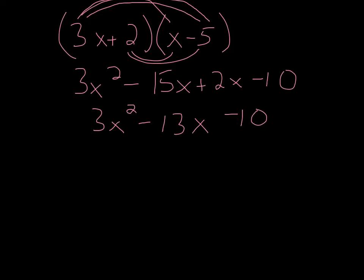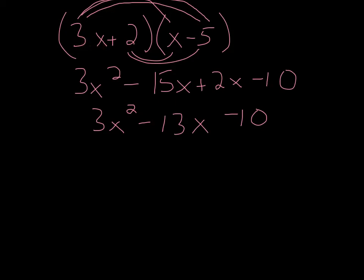Looking back at this, the −10 comes from the last two parts of the binomials. But the −13 is now influenced by whatever is opposite the 3x — we've got to take that into account. The rest works out just like we saw before. So let's move to the next example.